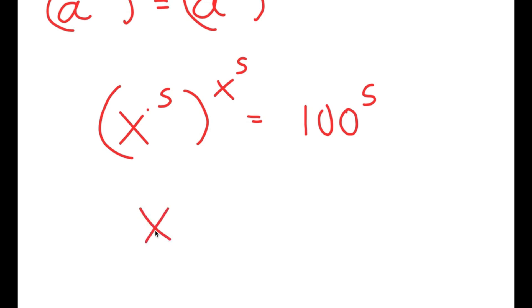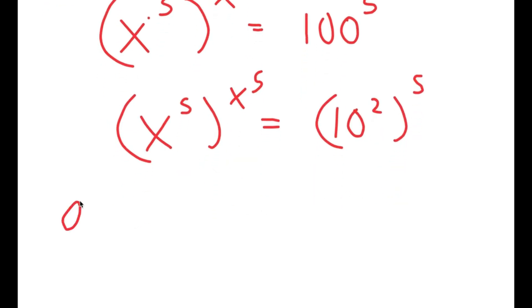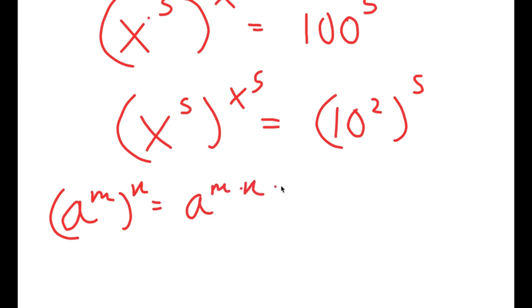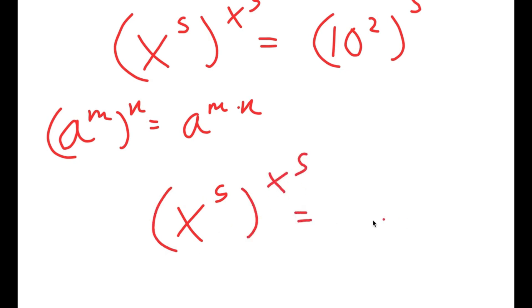Now I'm going to rewrite 100 as 10 squared. So now I have 10 squared to the power of 5. Another property of exponents is that if I have something in the form a to the power of m to the power of n, this is equal to a to the power of m times n. So 10 to the power of 2 to the power of 5 is going to equal 10 to the power of 2 times 5, which is 10 to the power of 10.